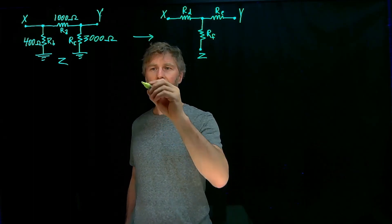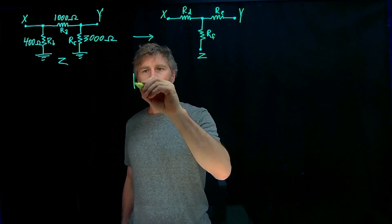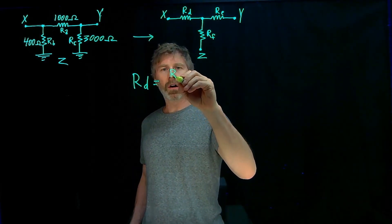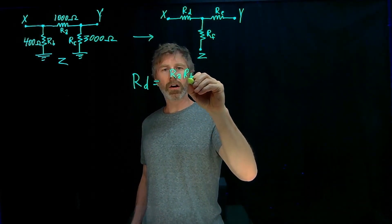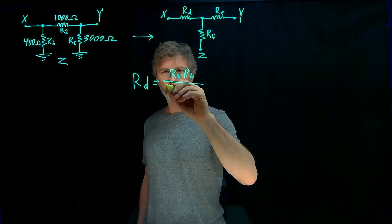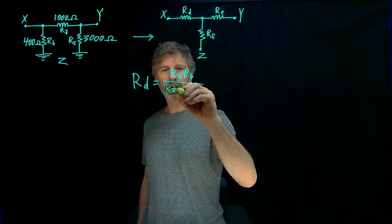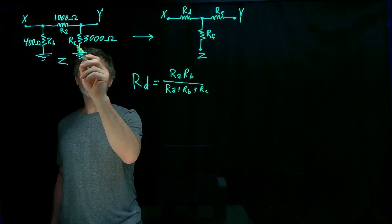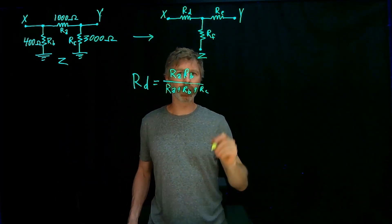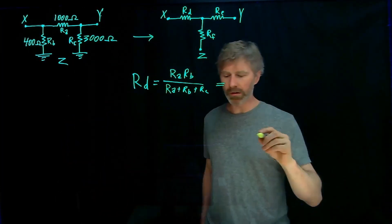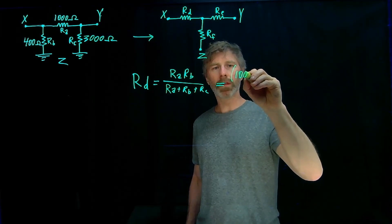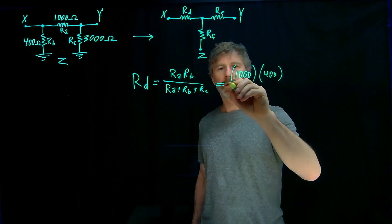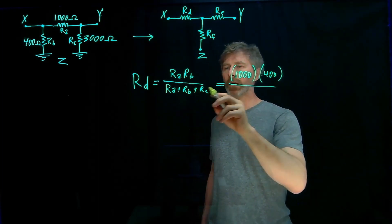The equation for Rd is equal to Ra times Rb times Rc divided by Ra plus Rb plus Rc. So Ra, Rb, and Rc are over here in our pi network, and then this is going to be equal to 1000 ohms times 400 ohms divided by the sum of Ra, Rb, and Rc, so that's 1000 plus 400 plus 3000, so that's over 4400.